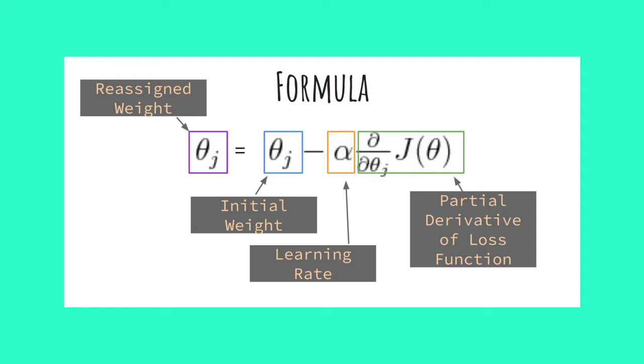Next is alpha, our learning rate. And finally, our partial derivative of the loss function, which is in essence, our slope of that tangent line I talked about earlier. So we multiply our slope by our learning rate to control how big a step we take.